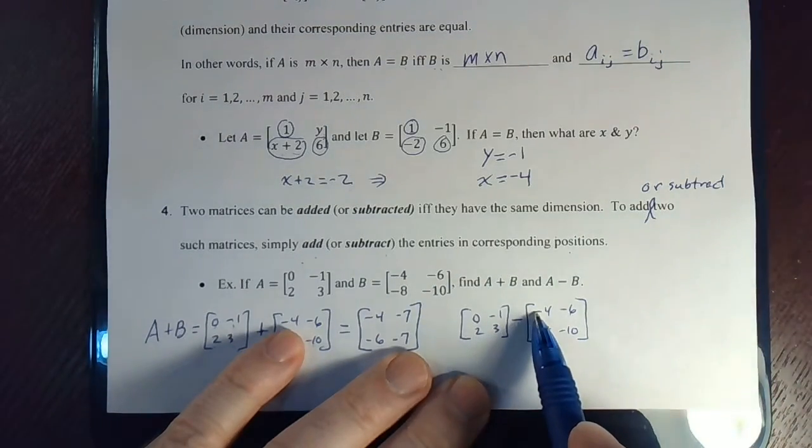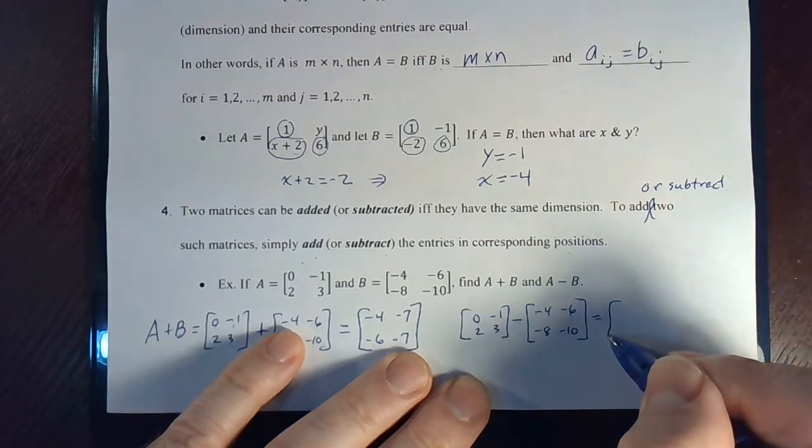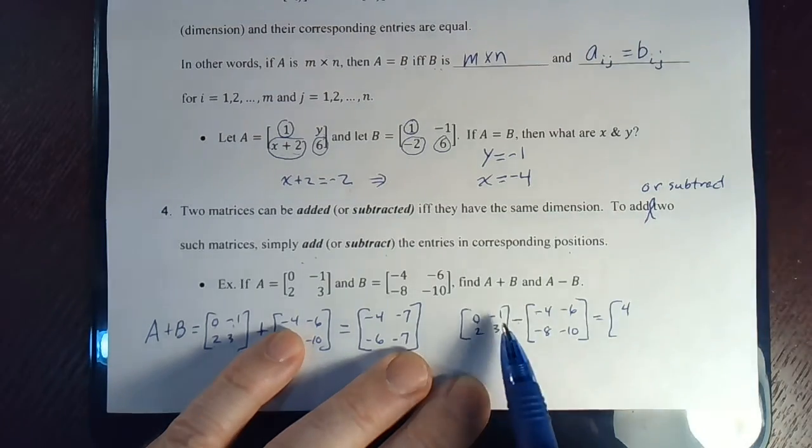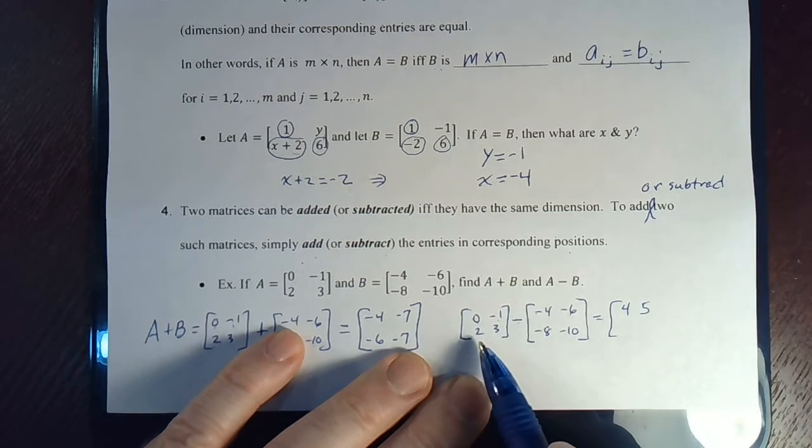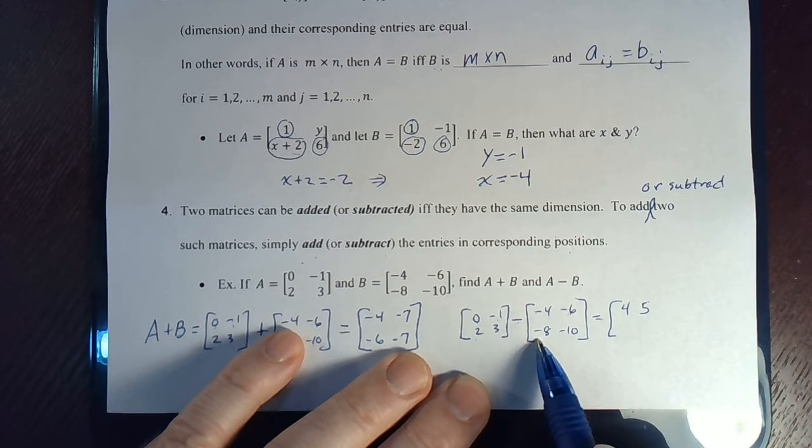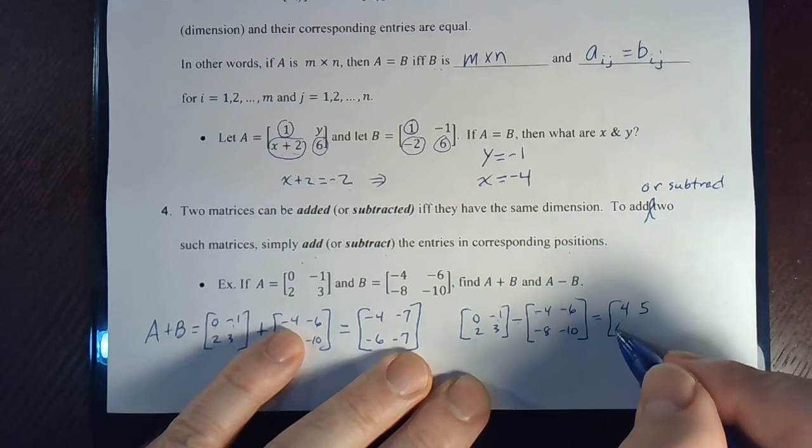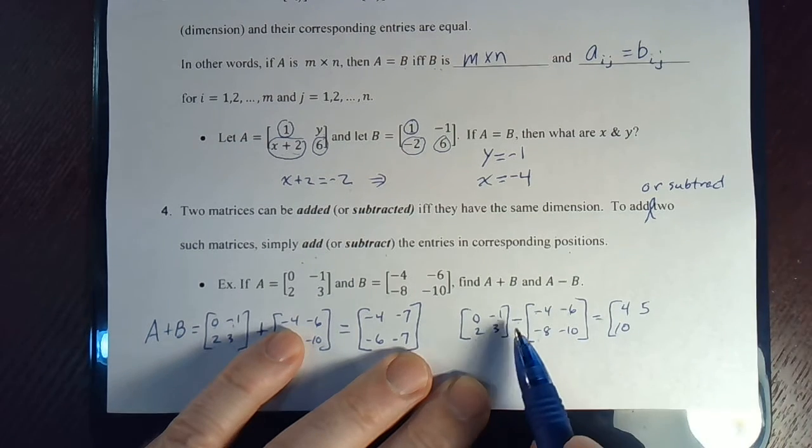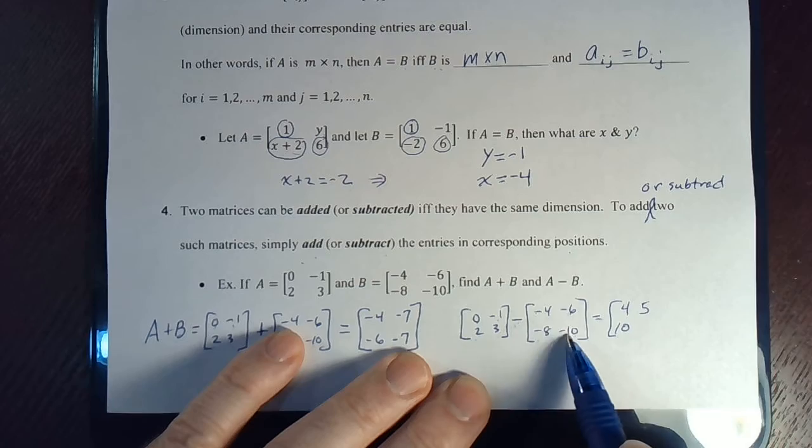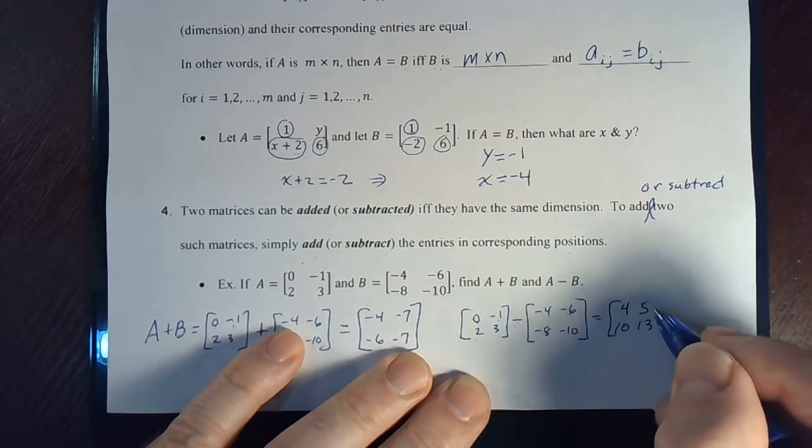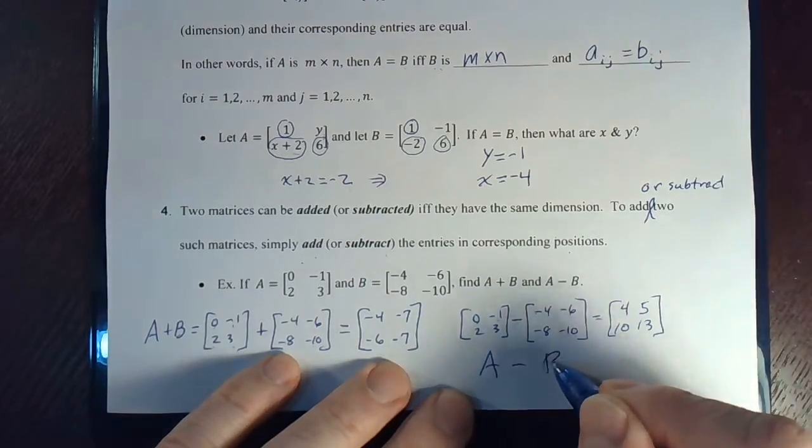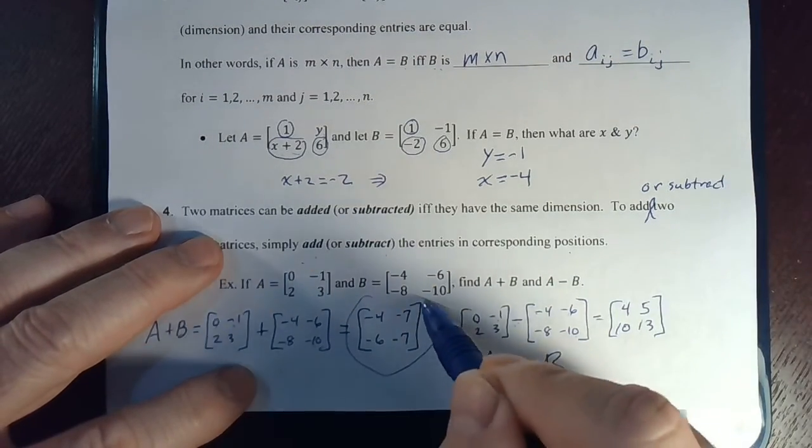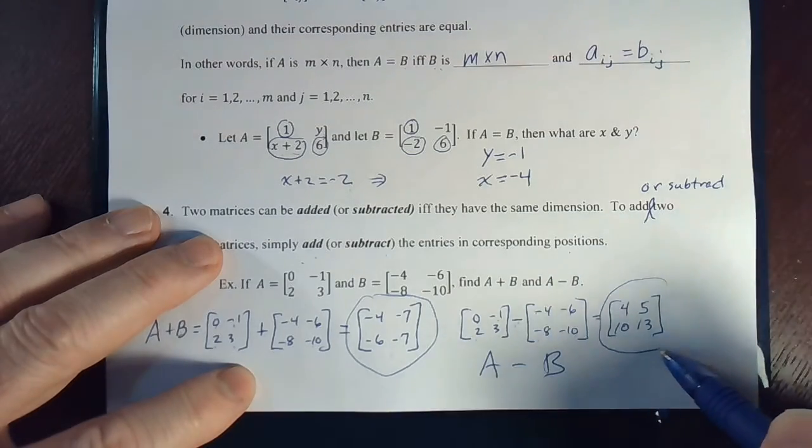0 minus negative 4 is 0 plus 4, which is 4. Negative 1 minus negative 6 is negative 1 plus 6, which is 5. 2 minus negative 8 is 2 plus 8, which is 10. And 3 minus negative 10 is 3 plus 10, which is 13.